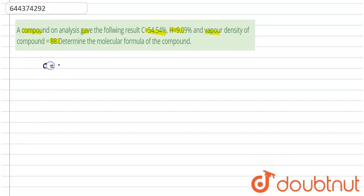Carbon is 54.54%, hydrogen is 9.09%, so oxygen will be 100 minus 54.54 plus 9.09. I'm taking oxygen because in most of the organic compounds, carbon, hydrogen, and oxygen are only used.